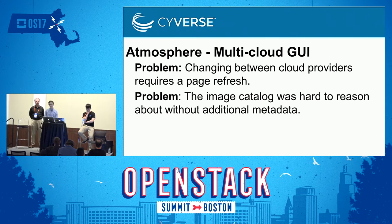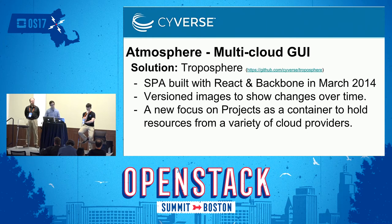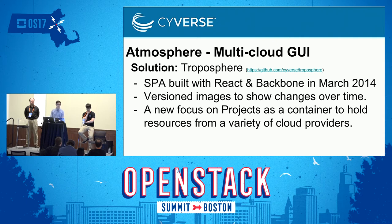Although Airport was created with multiple clouds in mind, it was only capable of showing one cloud provider at a time. Since our users had two or three OpenStack providers to choose from, this meant selecting a new cloud provider and waiting for a page refresh to keep track of their resources across clouds. Additionally, we realized that our image catalog was starting to grow but our users didn't have enough information to figure out which image they should be launching.